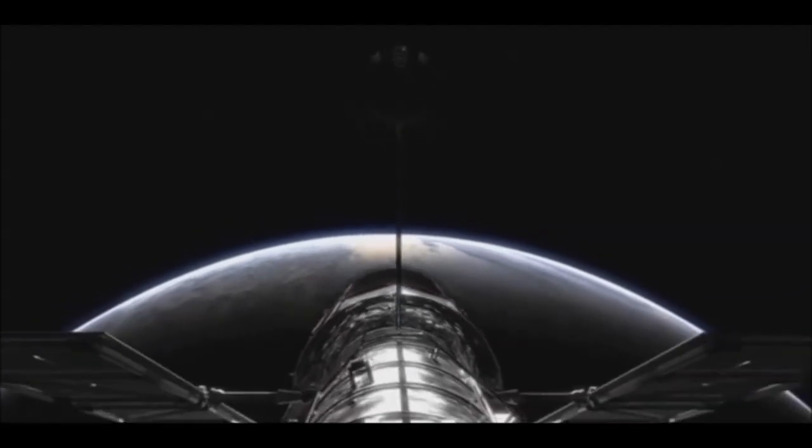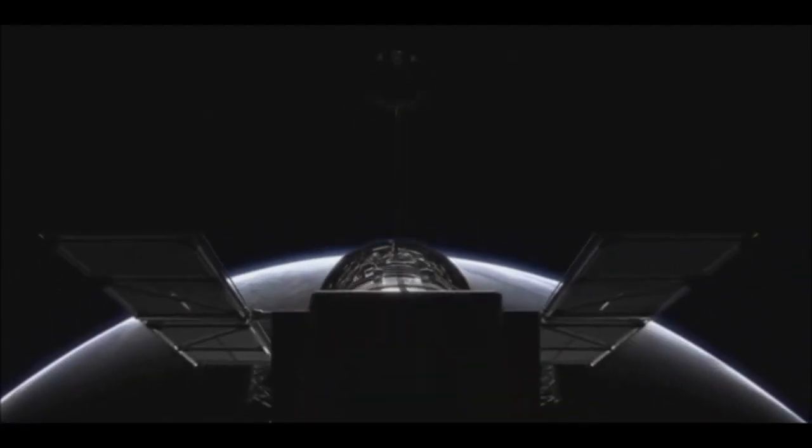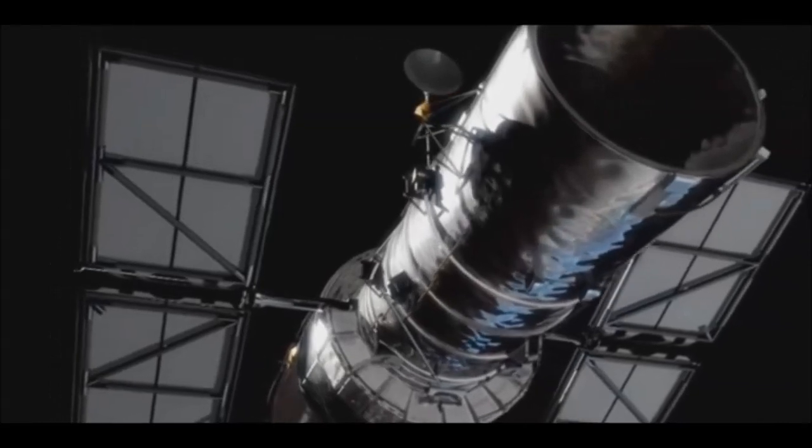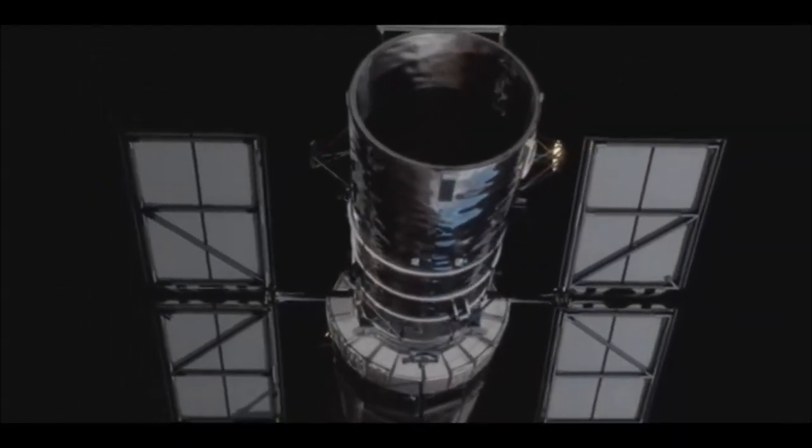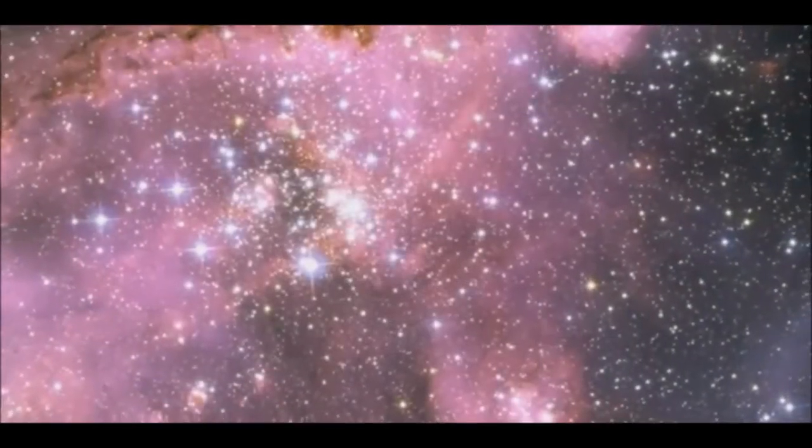Earth's atmosphere alters and blocks the light that comes from space. Hubble orbits above Earth's atmosphere, which gives it a better view of the universe than telescopes have at ground level.